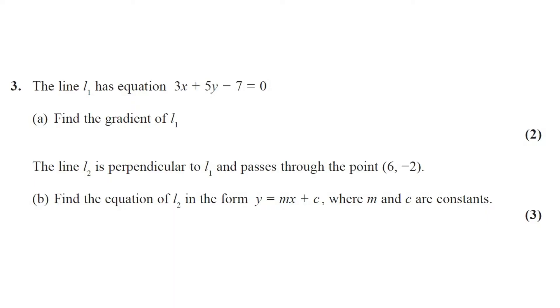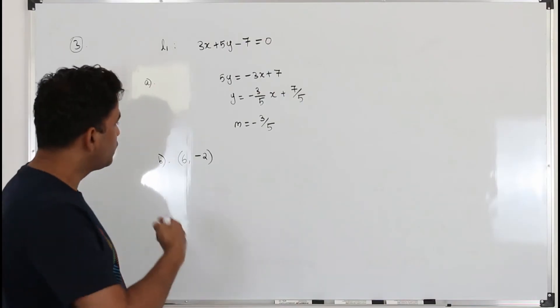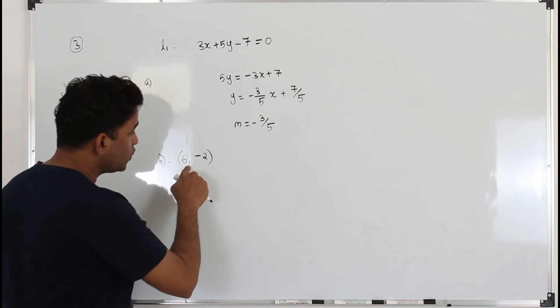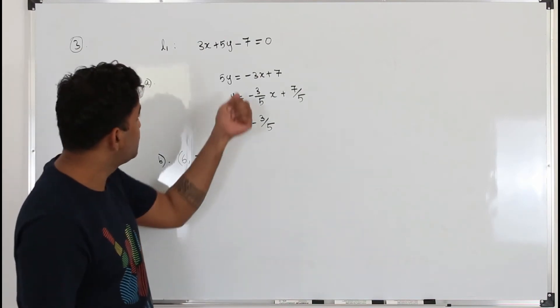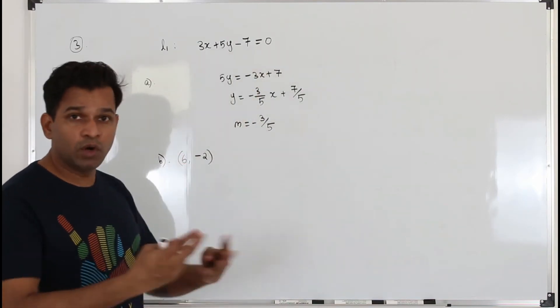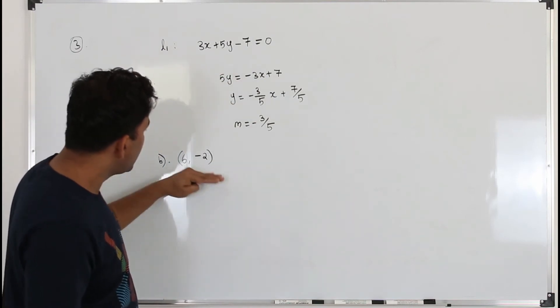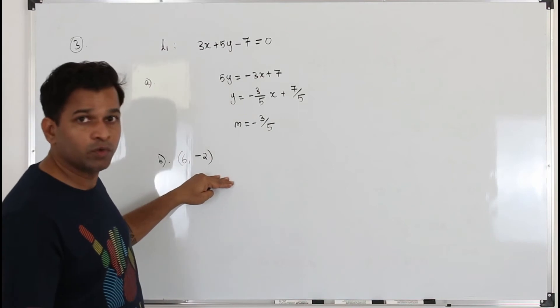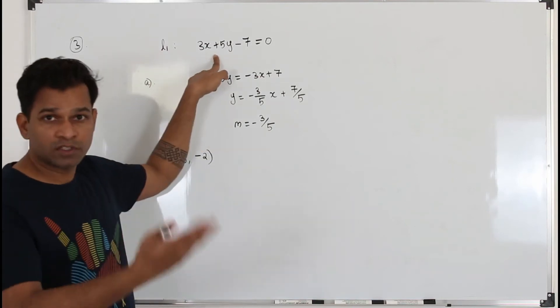The line L2 is perpendicular to L1 and passes through the point 6 comma negative 2. Part B, find the equation of L2 in the form y equals mx plus c, where m and c are constants. This question got three marks. In part B, we are going to find the equation of another line L2 that passes through this point and is perpendicular to this line. If two lines are perpendicular, L2 is perpendicular to L1.